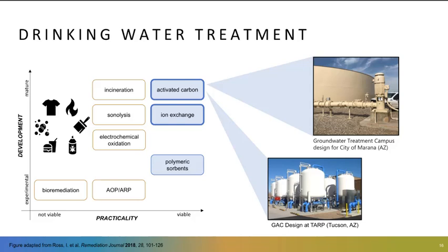We've used granular activated carbon in a number of treatment scenarios for many, many years, and it's also effective for PFAS. It's a process that has a track record — we know how to operate it, we know how to install it — and that's what is being used across the board right now for municipal-level drinking water treatment. Ion exchange is up and coming, almost as mature as activated carbon. You need the same kind of contact vessels, and from an engineering perspective it's a very similar process — you just have an ion exchange medium instead of carbon to remove PFAS.